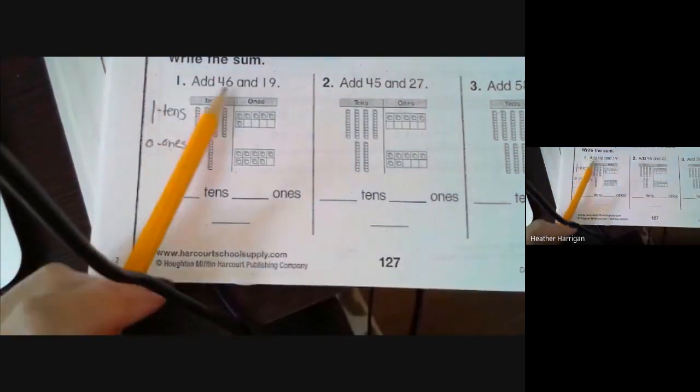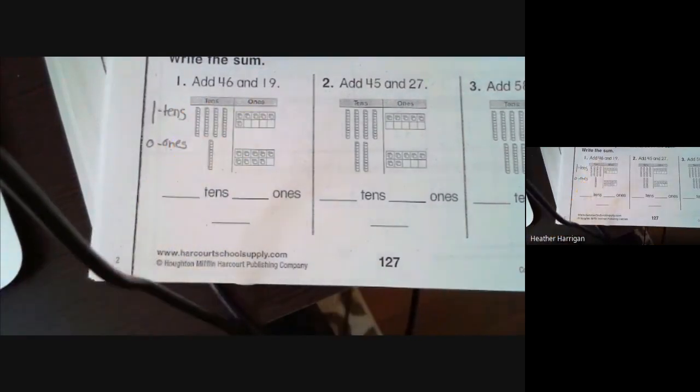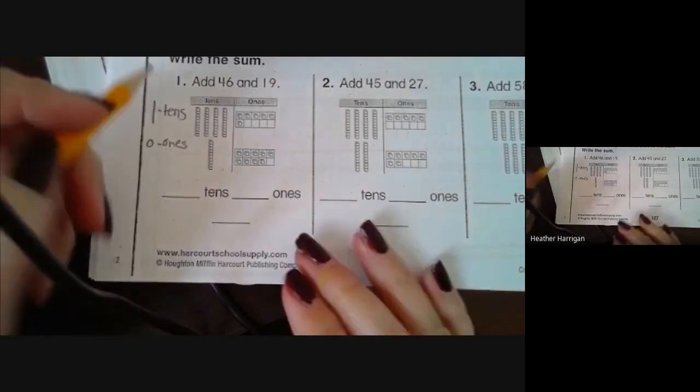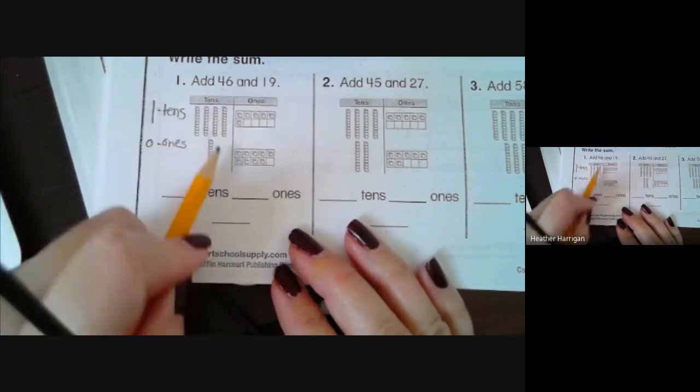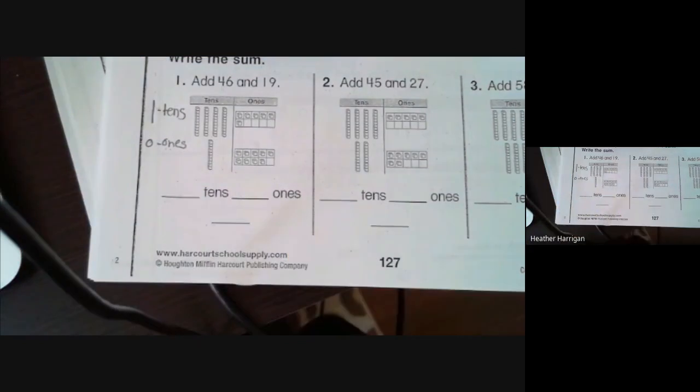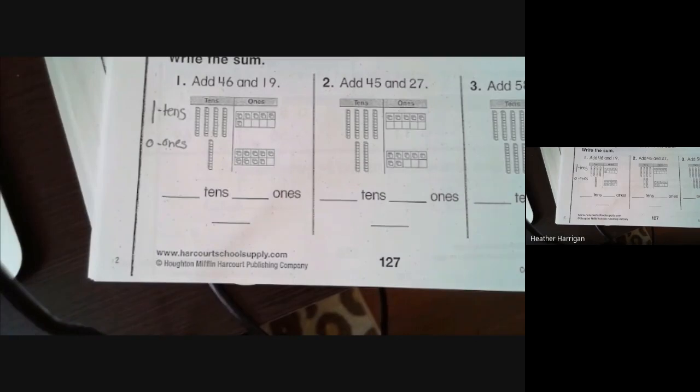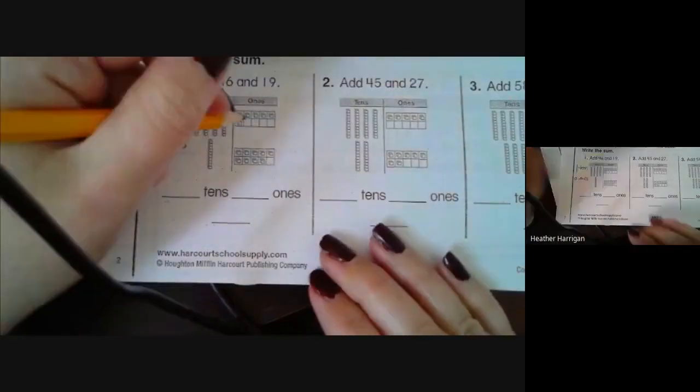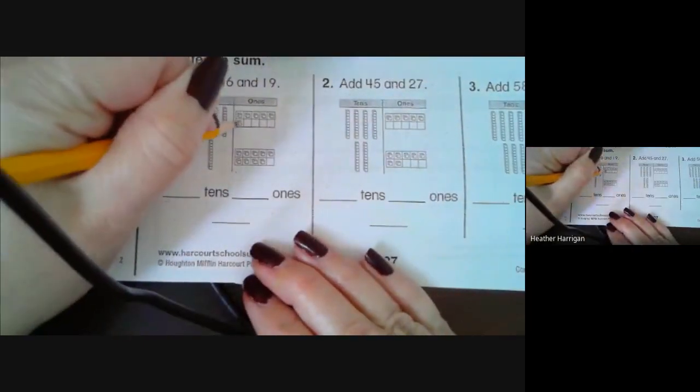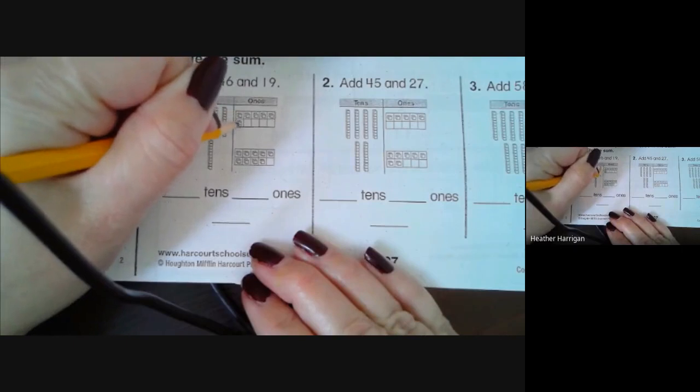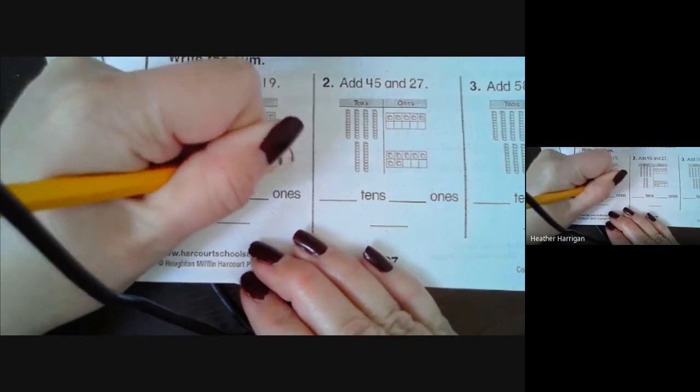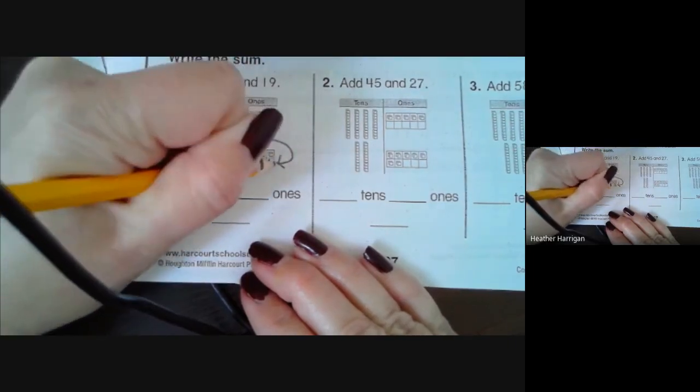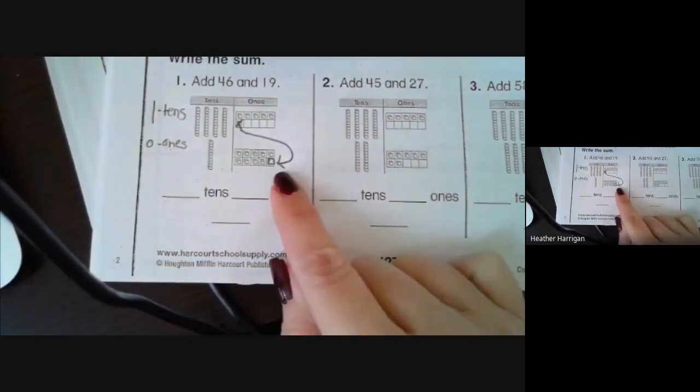So if we were to demonstrate 46 plus 19 using our ten frame strategy and drawing a quick picture, we would model 46 as four tens and six ones and 19 as one ten and nine ones. This is going to be like the first strategy, breaking apart numbers, except we're going to do it in a visual sense. We're going to take one one from the four tens and six ones and transfer it down to this ten frame, so that we make the ten frame full, which would make a ten.